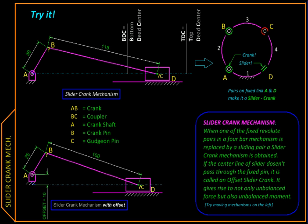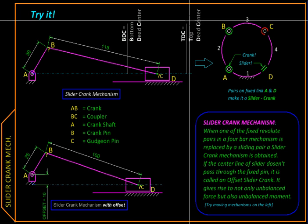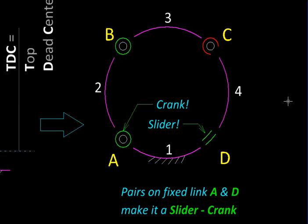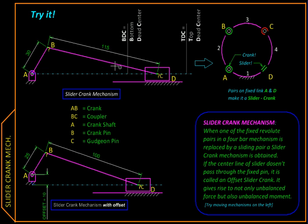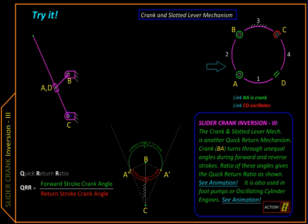If we start with a basic slider crank, which can be schematically represented like this, so it has a crank over here and on the other side it has a slider. And if we fix link number three, which is this coupler over here, then we get the third inversion of slider crank like this.